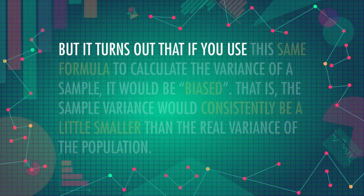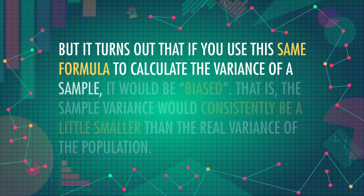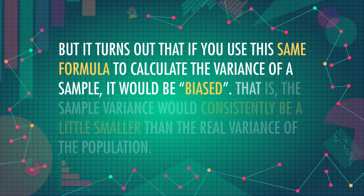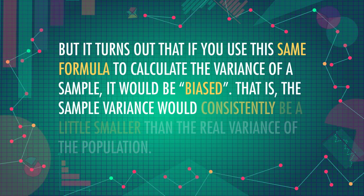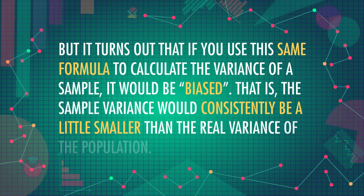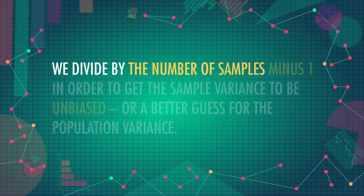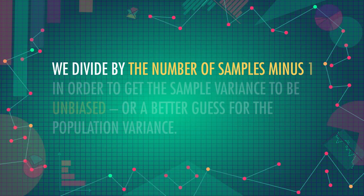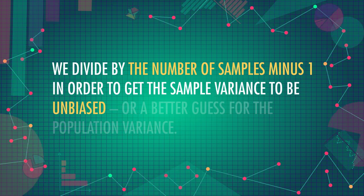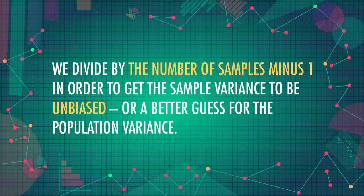It turns out that if you use this same formula to calculate the variance of a sample, it would be biased — that is, the sample variance would consistently be a little smaller than the real variance of the population. We divide by the number of samples minus 1 in order to get the sample variance to be unbiased, or a better guess for the population variance.